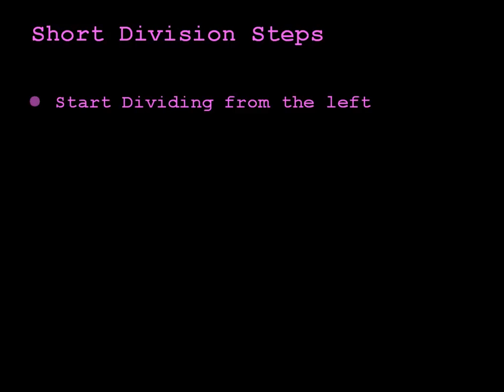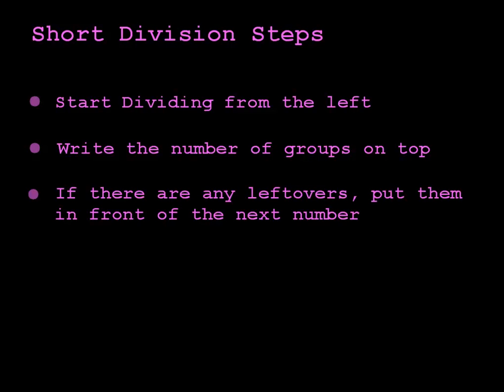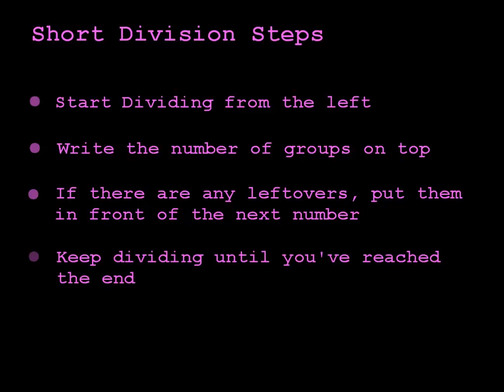And now we'll just quickly review the short division steps. When you divide, you always begin from the left. You start with the first number and see how many groups you can make, and you're going to write the number of groups on top. Now if there's any leftovers, you need to write those leftovers in front of the next number. And because short division is a repetitive process, you just keep on doing this again and again until you've reached the end of the number inside the house. And that's how you do short division. It works really well when you have small divisors like 2, 3, 4, and 5. But you can also do it with divisors of 6, 7, 8, and 9, even larger ones, if you're good at your mental math or you're willing to do a little bit of scratch work on the side.